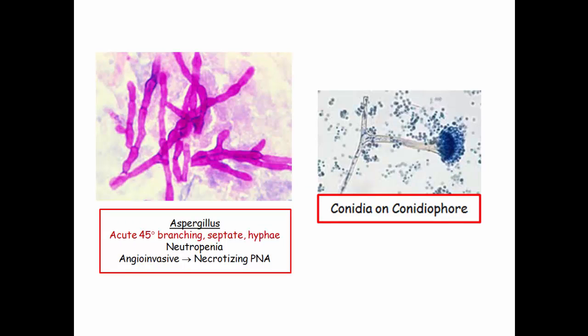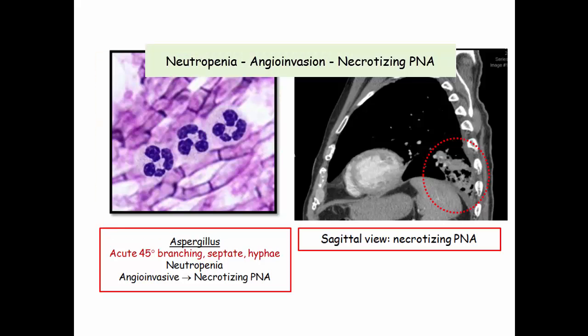Here's aspergillus — it's a mold with hyphae that are septated and branched at 45 degrees. It grows conidia on its tip; the fruiting body is called a conidiophore. Neutrophils kill and contain this bug. Without neutrophils, you have an aggressive angioinvasive infection characterized by necrotizing pneumonia.